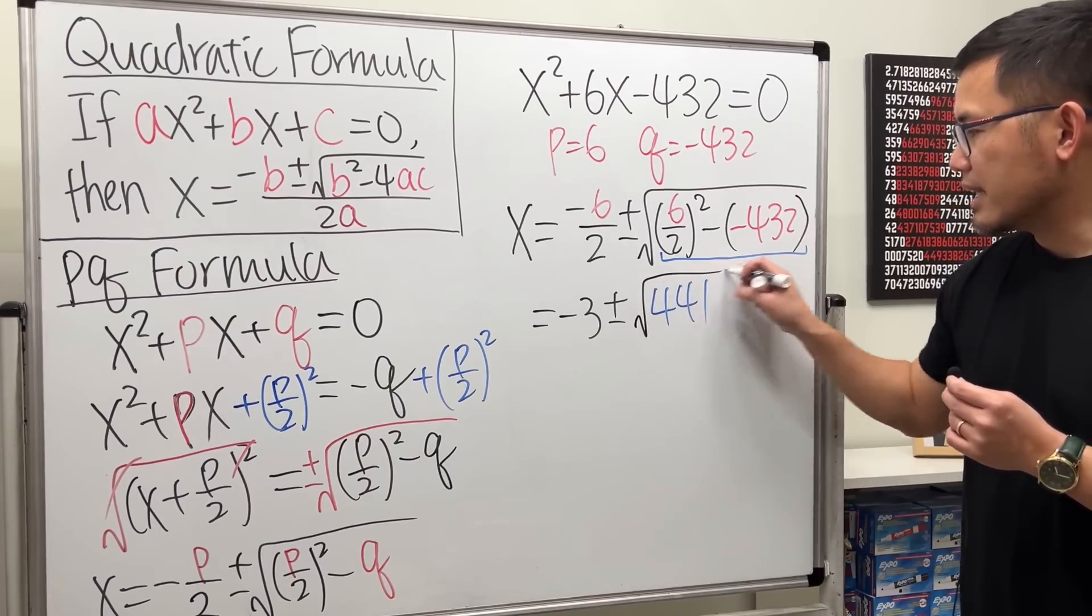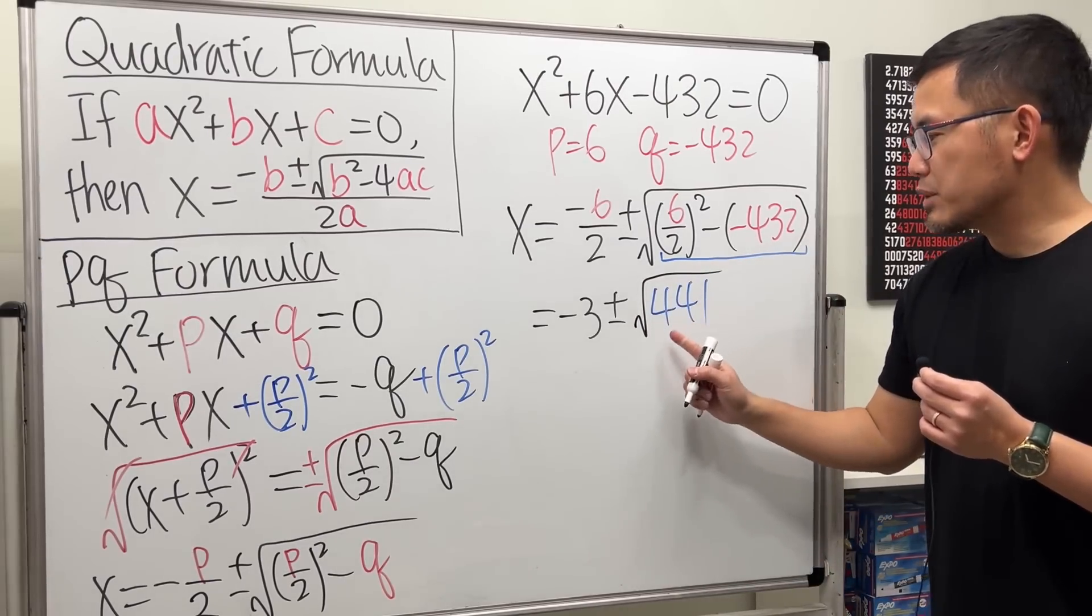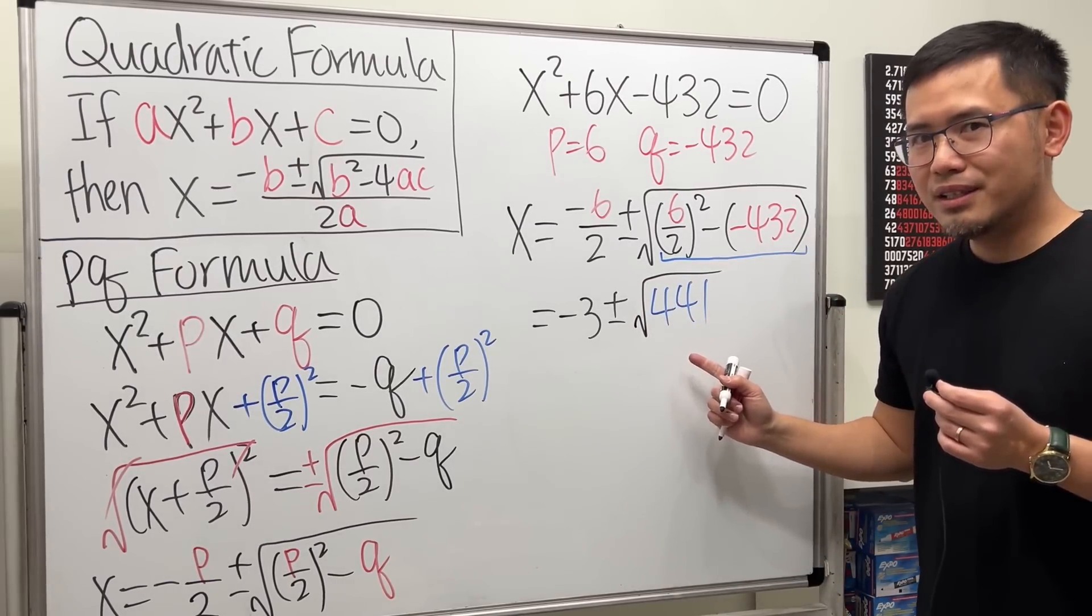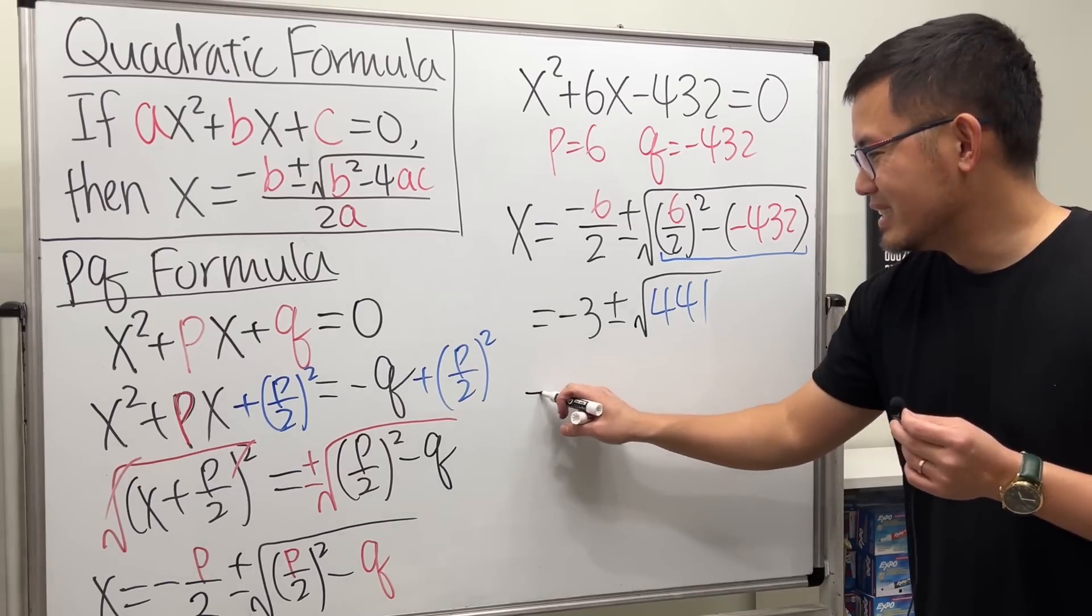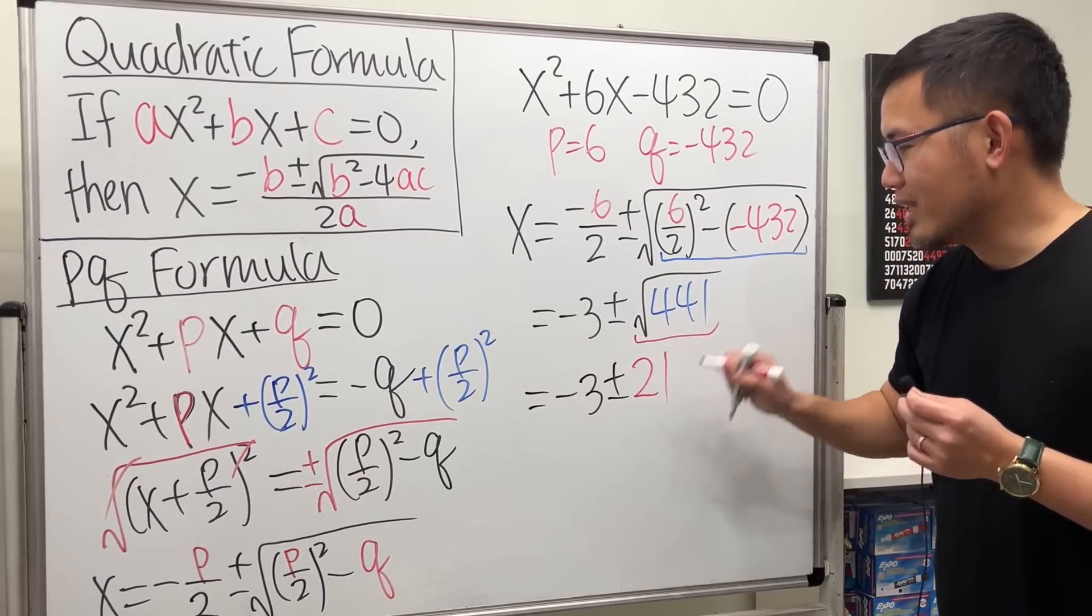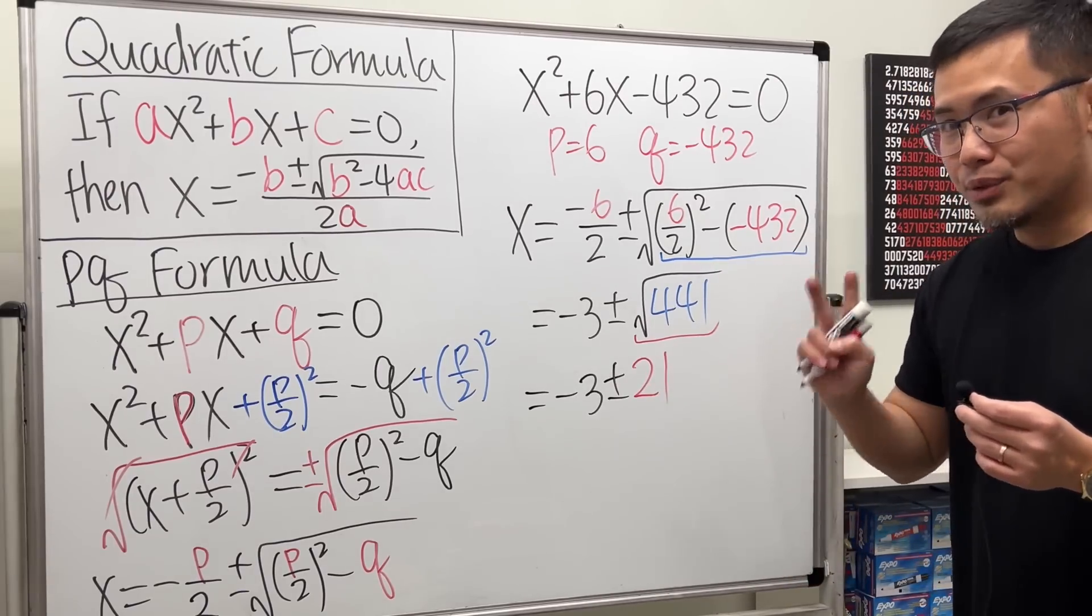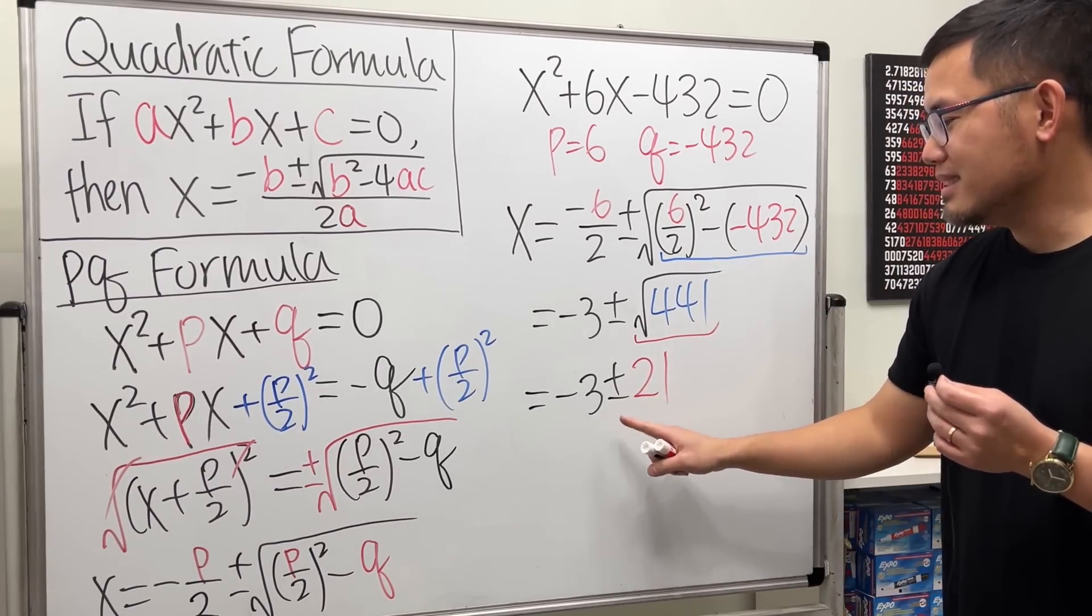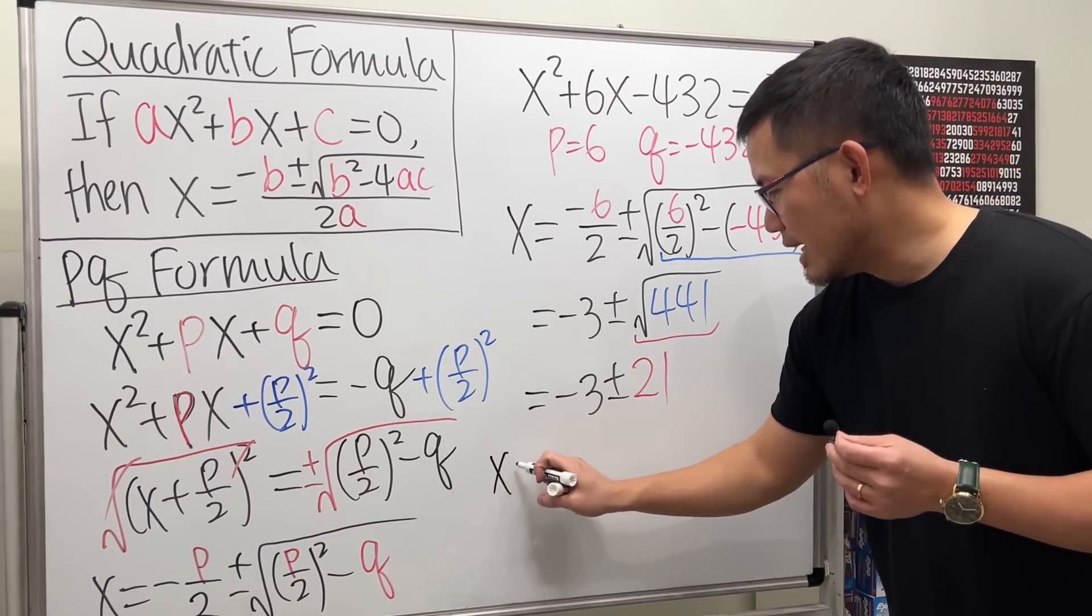And, of course, we'll still have that square root. Square root of 441 is 21. So, this is negative 3 plus or minus 21. We have two answers, right? One was the plus, the other one was the minus. So, let me write this down.